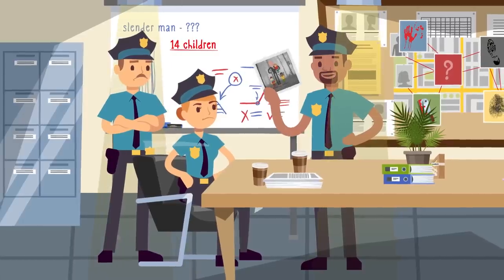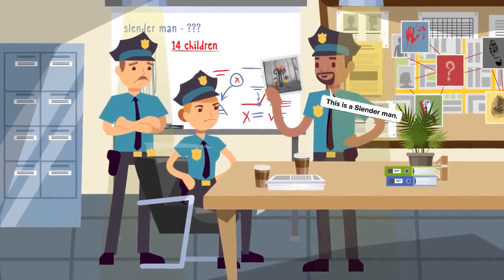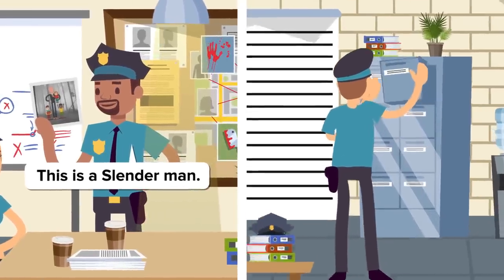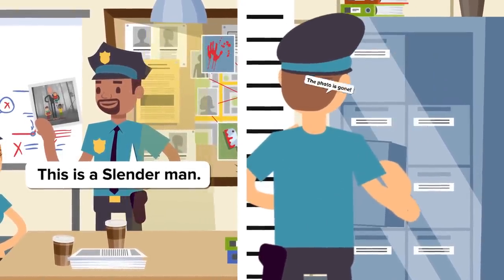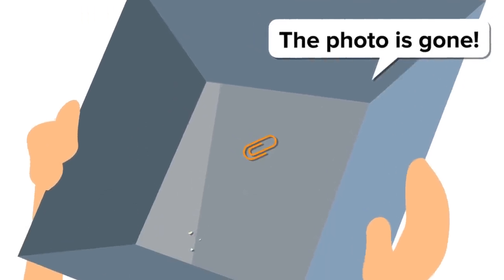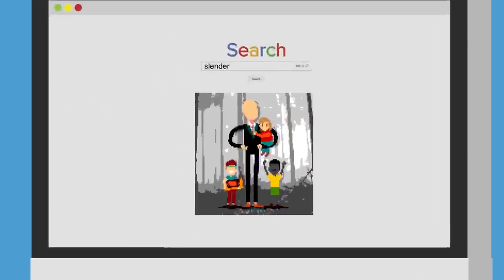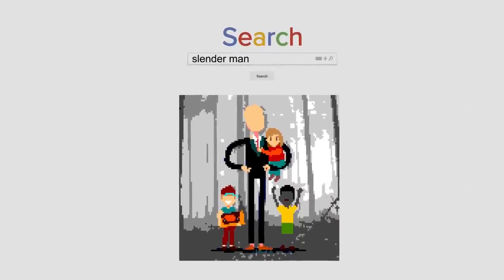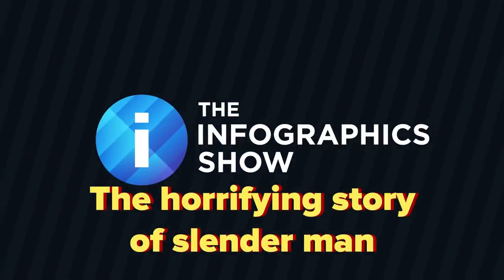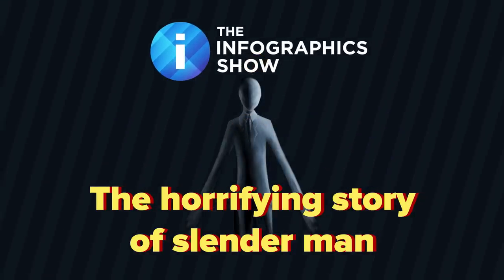The individual appears to be wearing a black suit but has disproportionately long and slender limbs. The police immediately begin referencing the unknown figure as Slender Man. Seized by police as evidence, the photo disappears until it finds its way online decades later, met by hosts of people claiming to have seen the terrifying figure. Hello and welcome to another episode of the Infographics Show — today we're taking a look at the horrifying story of Slender Man.